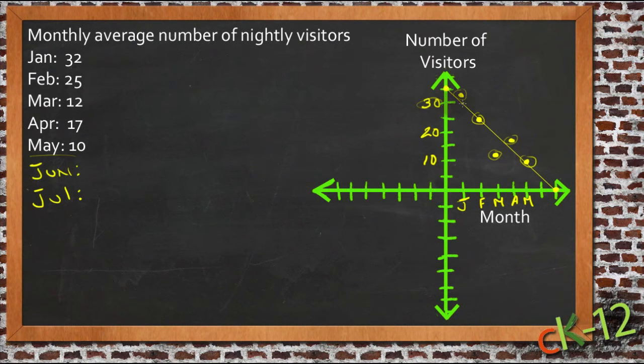So if we go down one over one on our line here, we can see that the change is the same every month. So we can figure our slope as, if it's down one over one, then our slope, m, is negative one.